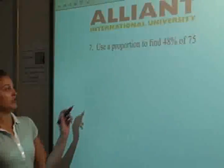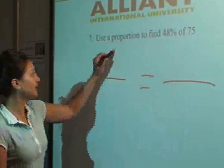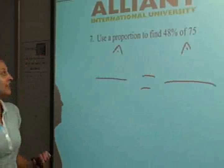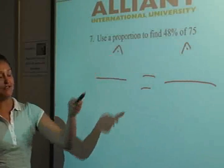Hey guys, today we are going to use a proportion using our proportion kitty. We set it up like this. See, it looks like a kitty. And we are going to find 48% of 75.